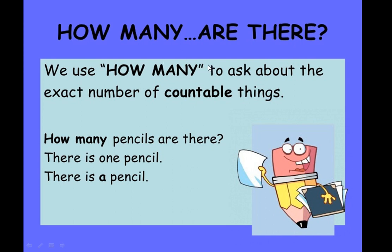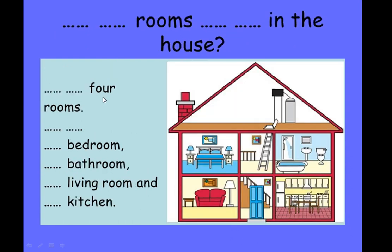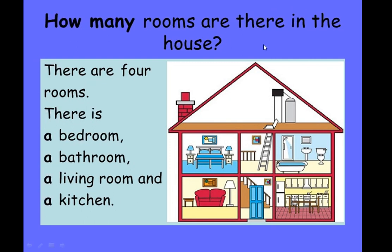We use 'how many' to ask about the exact number of countable nouns. For example: how many pencils are there? There is one pencil / there is a pencil. Looking at a picture of a house — how many rooms are there in the house? There are four rooms: there is a bedroom, a bathroom, a living room, and a kitchen.